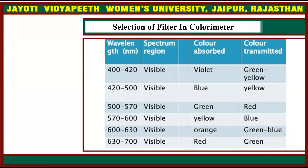For 570 to 600 nm, also visible: yellow is absorbed and blue is transmitted. For 600 to 630 nm, spectrum is visible: orange is absorbed and green-blue is transmitted. For 630 to 700 nm, also in the visible range: red is absorbed and green is transmitted.